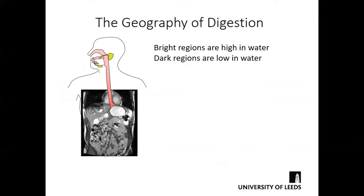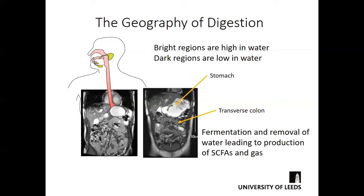In these MRI images, bright regions are high in water and darker regions are low in water. Regions such as the stomach — where you can see the esophagus empties into — are shown bright. You can also see black regions representing areas filled with gas as a result of fermentation. Taking a different slice, you can see the stomach and the transverse colon. Fermentation and removal of water takes place in the colon, leading to production of short-chain fatty acids and gas, hence the dark regions.